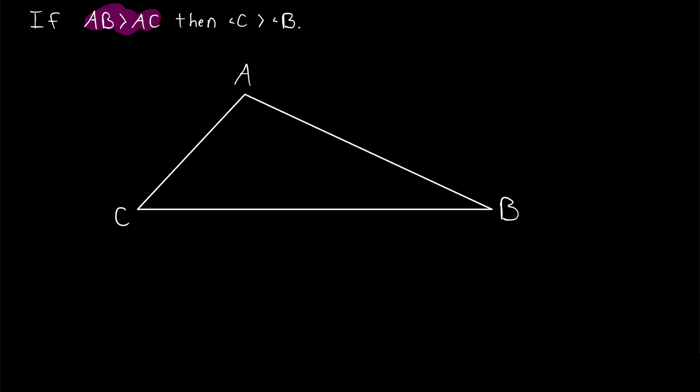So a longer side means a longer opposite angle. I encourage you to give this proof a try yourself before watching the rest of the lesson. It's a pretty straightforward direct proof.